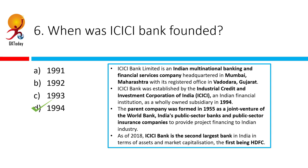ICICI Bank was established by the Industrial Credit and Investment Corporation of India. The parent company itself was formed in 1955 as a joint venture of the World Bank, India's public sector banks, and public sector insurance companies. As of 2018, ICICI happens to be the 2nd largest bank in India in terms of assets and market capitalization, while HDFC is the 1st.